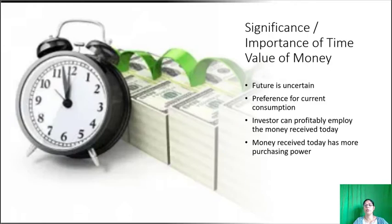For example, if you have 100 rupees today, you can deposit that money in a bank account and earn interest at some percentage, maybe 8% or 9%. So after one year, if you have 100 rupees today, you will get 108 rupees after one year. But if you receive the same amount after one year without any interest, then that 100 rupees remains as 100 rupees only.